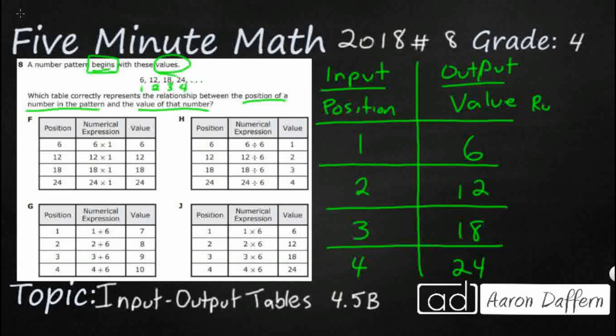And now all we're looking for is our rule. So we are going side to side because our input and output are side to side. We are getting bigger from 1 to 6, 2 to 12. There's only two ways to do that. We're going to add or we're going to multiply.